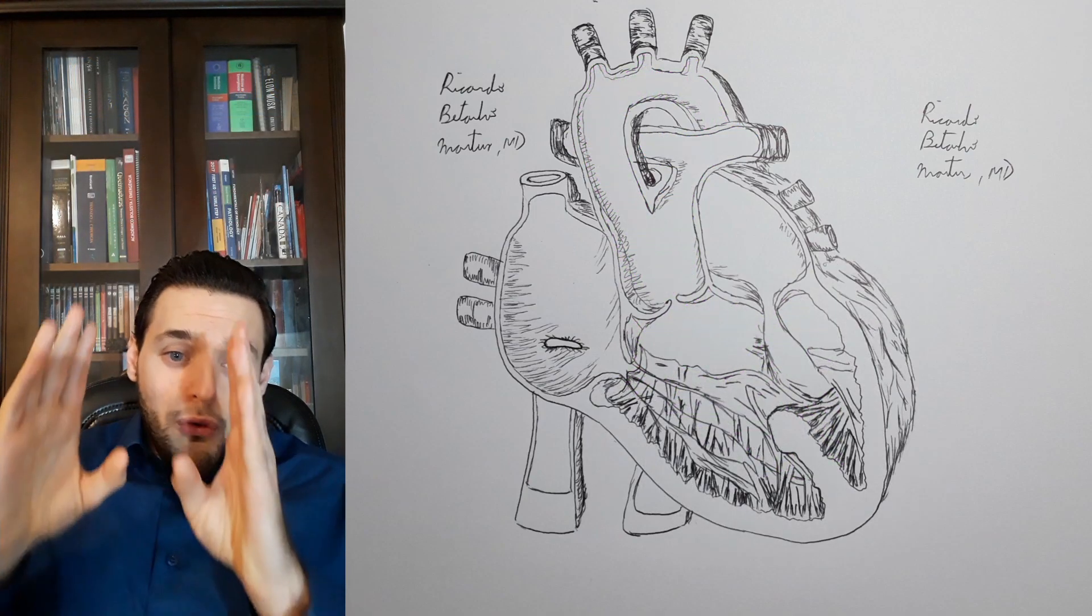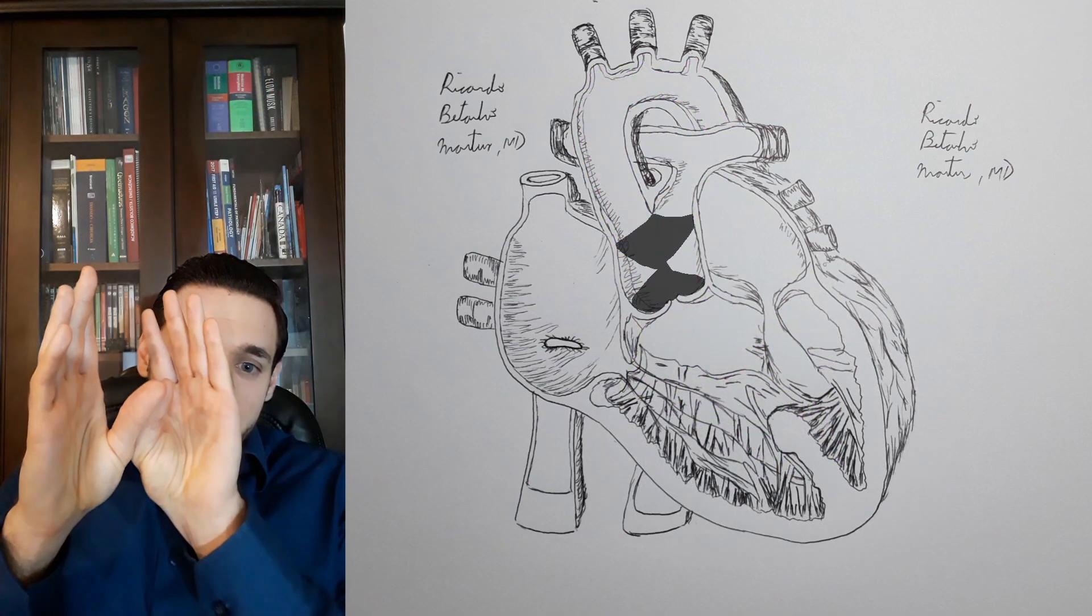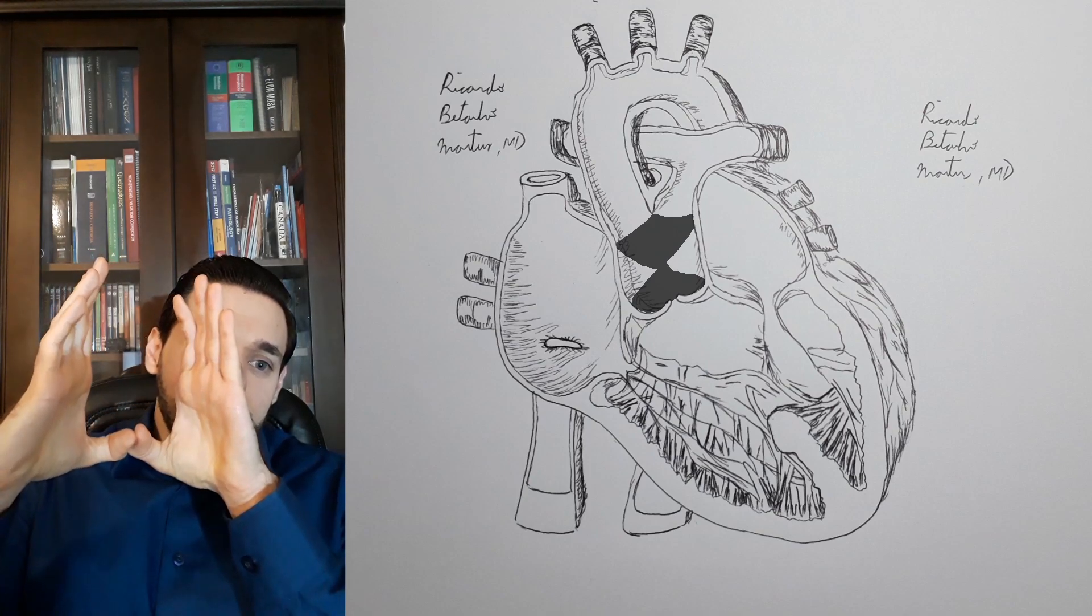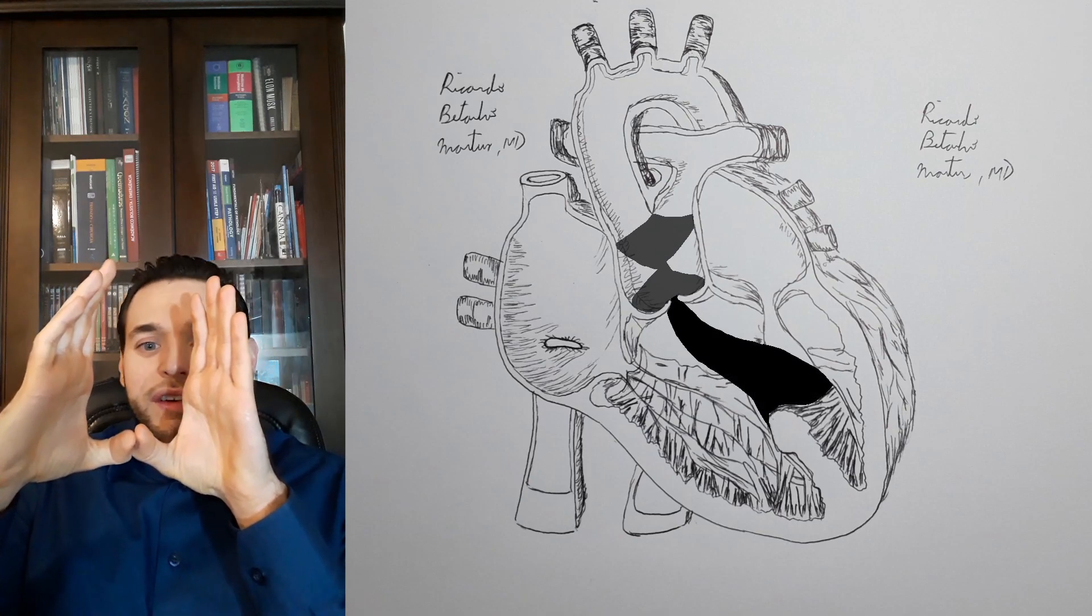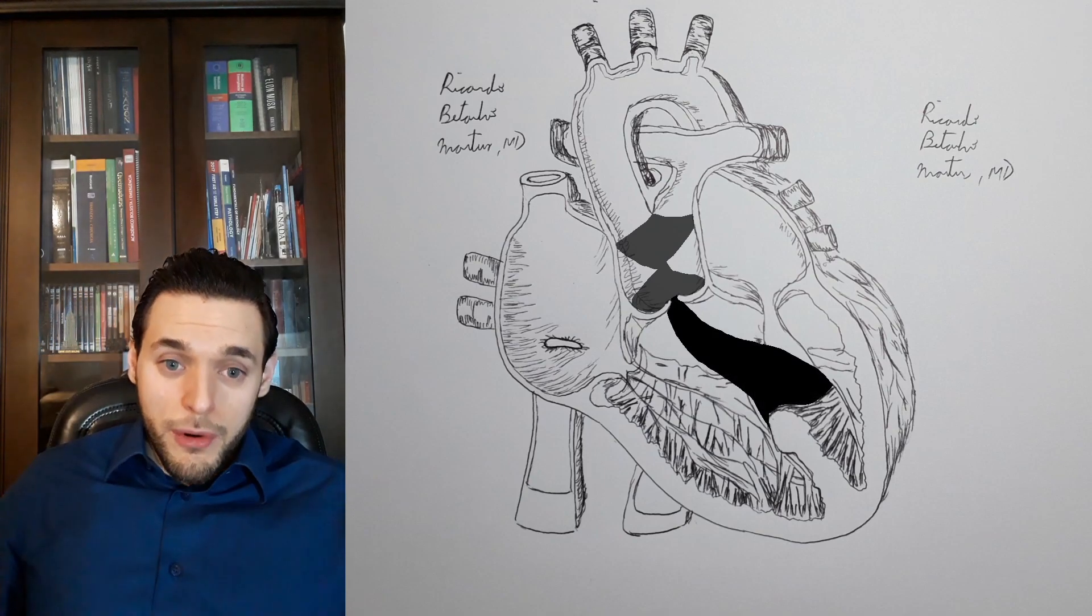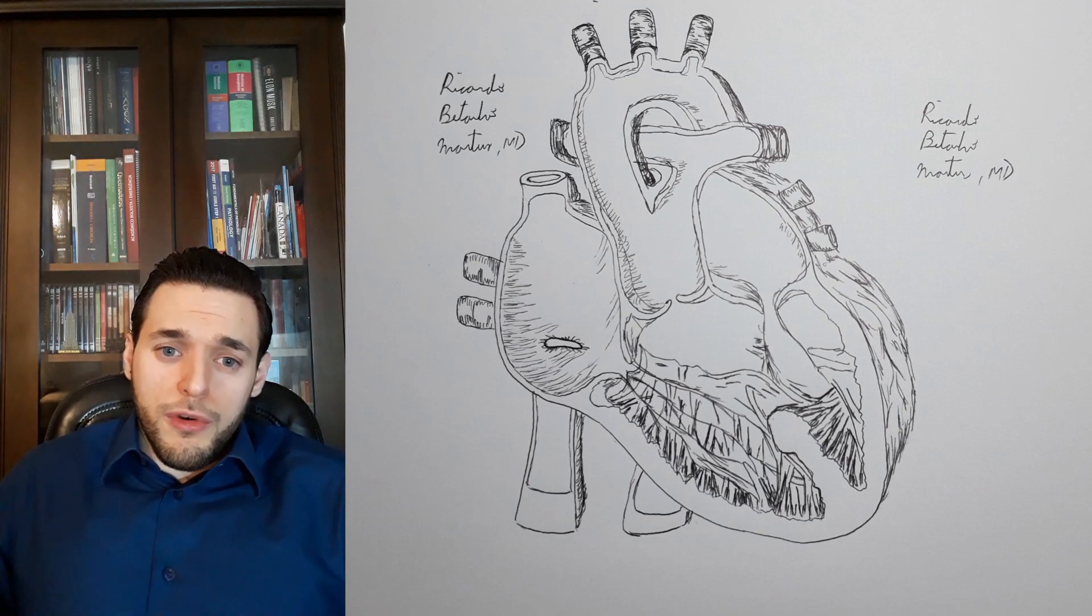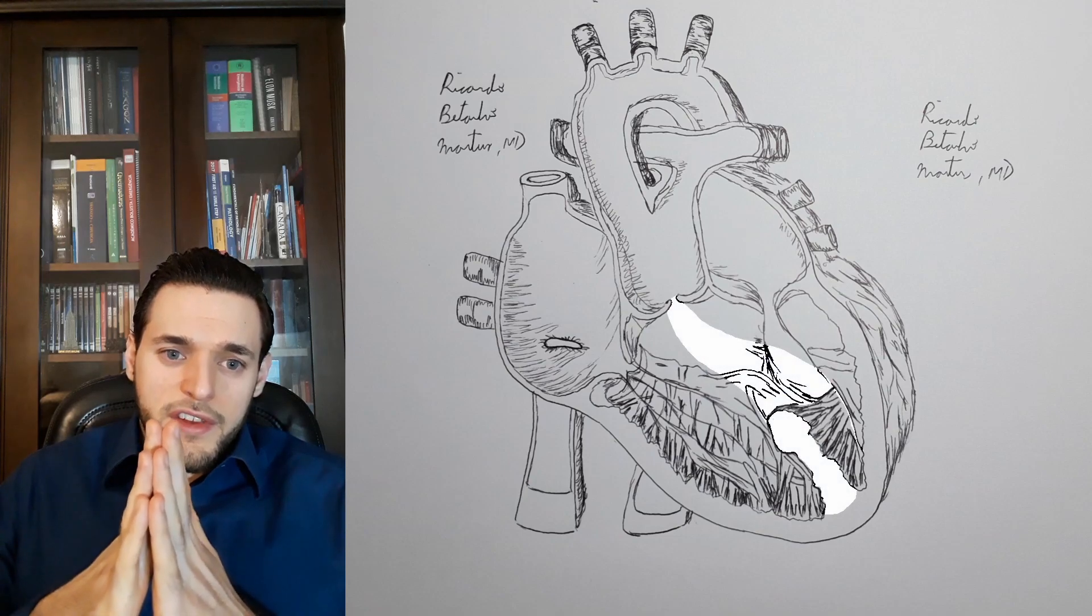Since both the aorticopulmonary septum and the contiguous structure inferior to it, the membranous portion of the interventricular septum are of neural crest origin, persistent truncus arteriosus will almost invariably be associated with a ventricular septal defect.